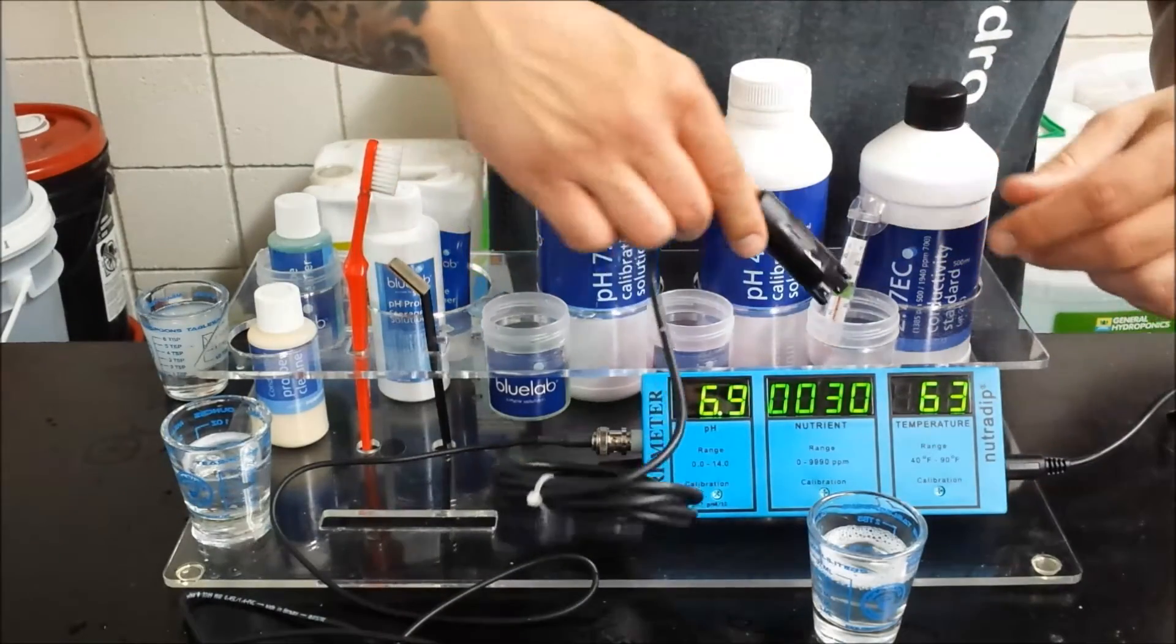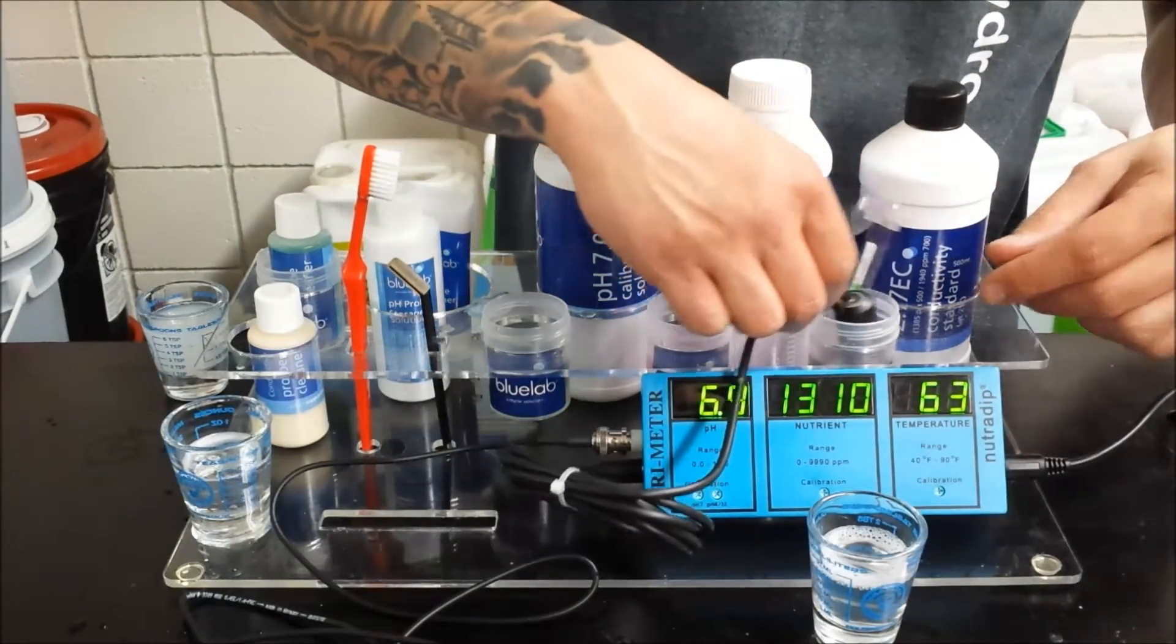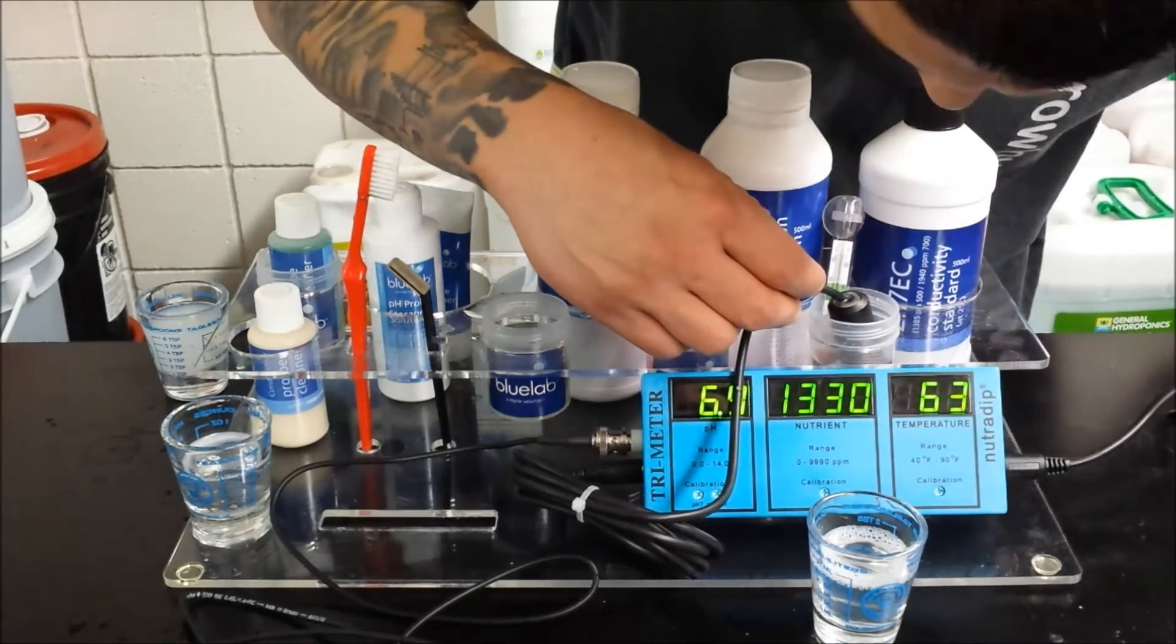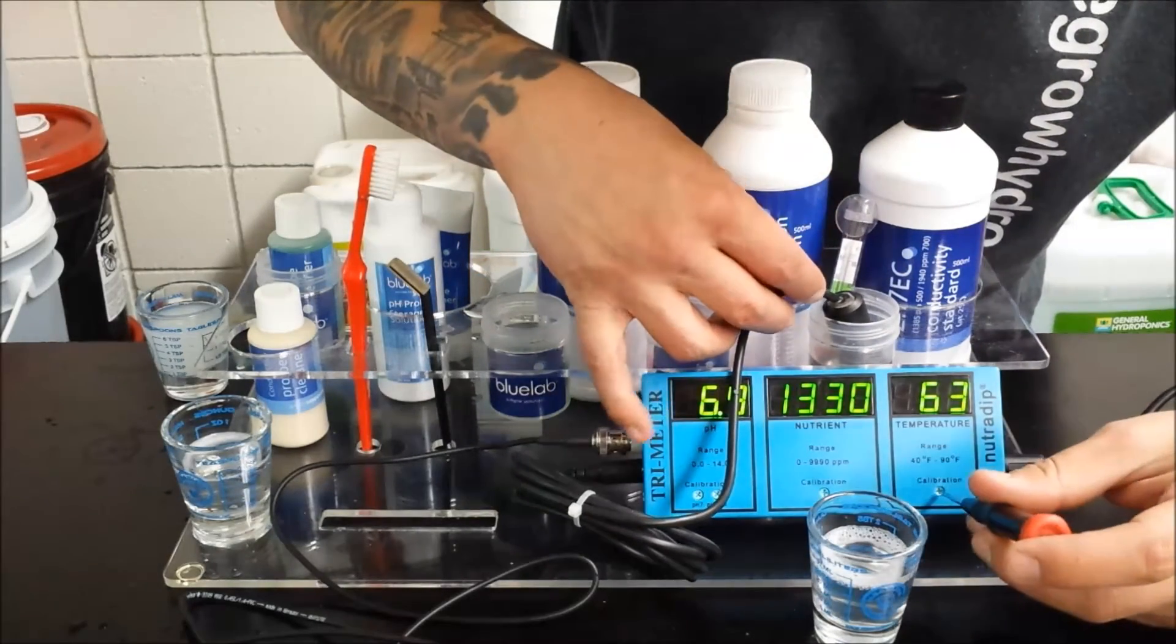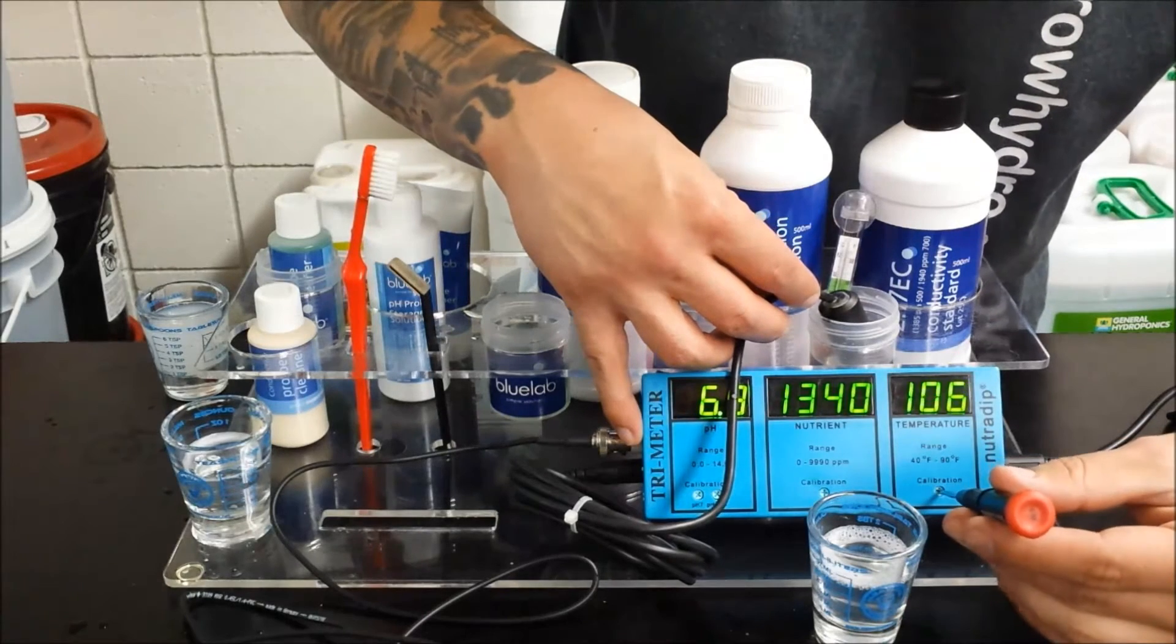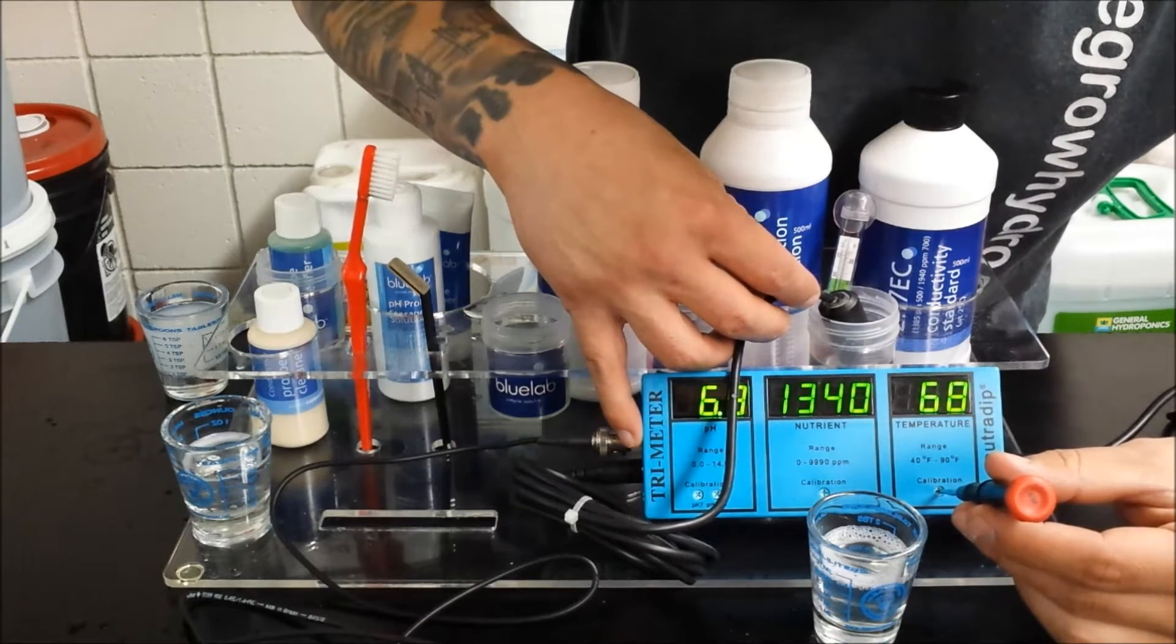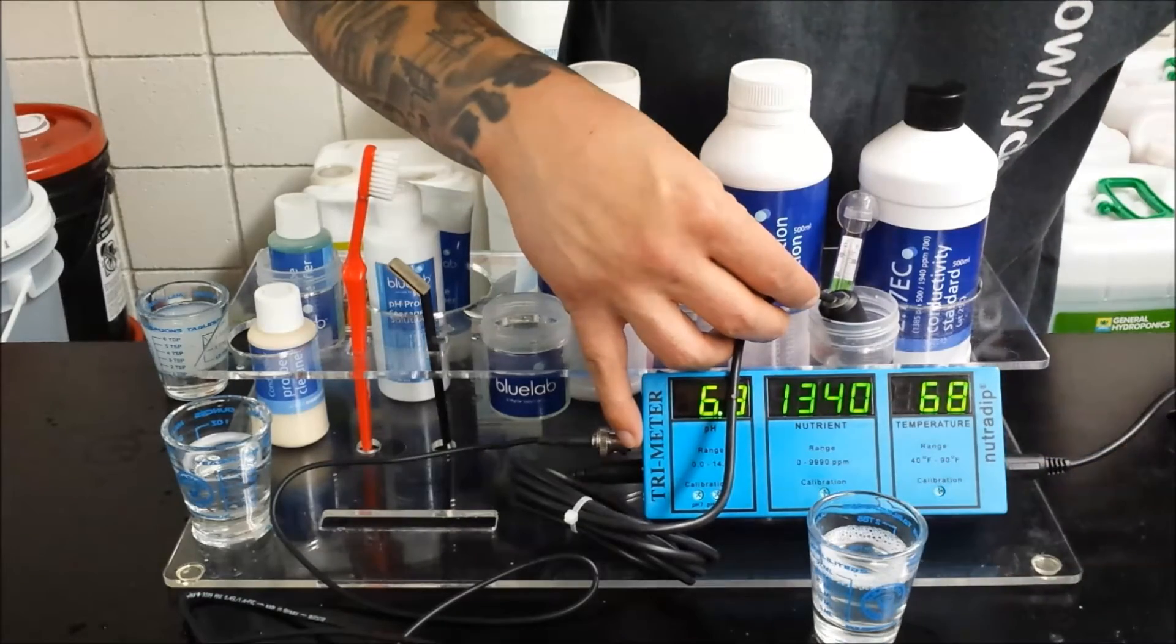First with this meter you need to calibrate the temperature because that is your compensator, so have a thermometer handy. And then you're going to want to turn the temperature screw until you get to the correct temperature, which is reading 68 on this.